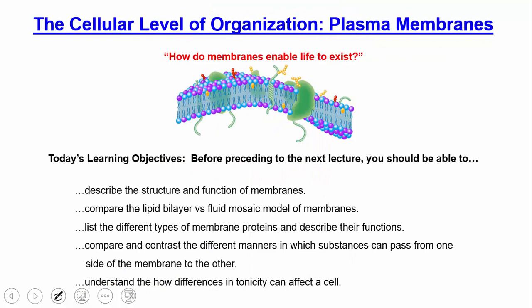In today's lecture we focused on why membranes exist and how they enable life. Membranes separate the inside of the cell from the outside, creating gradients. As molecules pass back and forth across the membrane because of those gradients, chemical reactions can occur, helping to sustain life. Make sure you know the learning objectives and can execute them before proceeding to the next lecture.